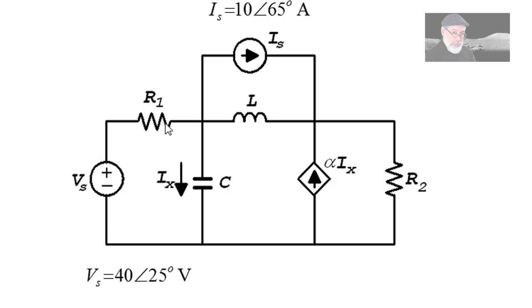And the values of the passive elements? Well, R1 is 2 ohms, R2 over here is 4 ohms. And the reactive elements are given by their impedances. The impedance of the capacitor in this case is negative J 2 ohms.